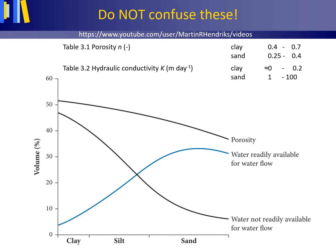This figure shows the volume percentage of pores in the subsurface along the vertical axis, and the textural classes — clay, silt, and sand — going from the smaller to the larger particles on the horizontal axis. The porosity for clay is larger than the porosity for sand, as you can also see from these numbers.